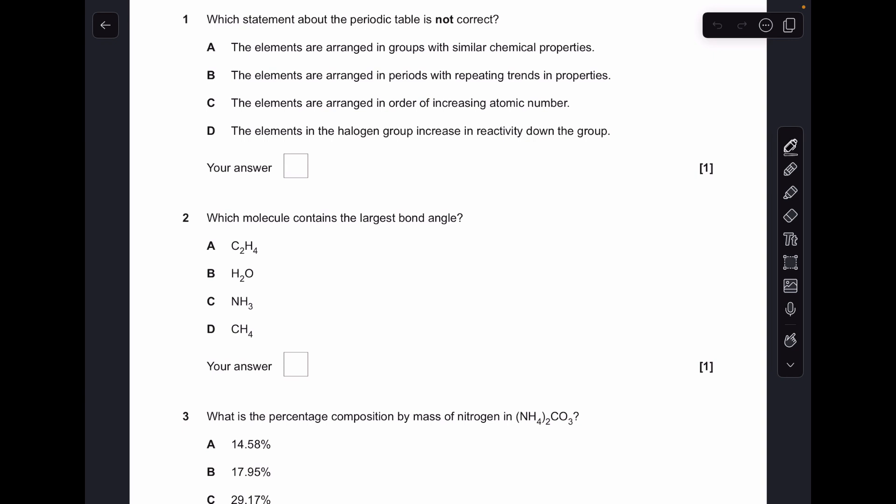Okay so make a start. Which statement about the periodic table is not correct? Well A is correct, so is B, so is C. D is the wrong one because the halogen group reactivity decreases as you go down the group.